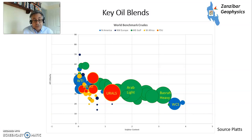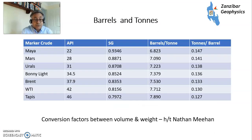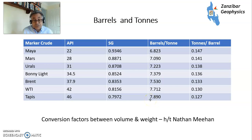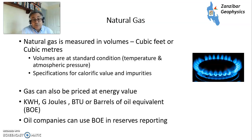So how do you convert between weight and volume? Nathan Ethan, a well-known petroleum engineer, published data on different crude types — Maya from Mexico, Mars from the US Gulf of Mexico, Urals from Russia, Bonny Light from Nigeria, Brent from the North Sea, WTI, and Tapis from Malaysia. They have different APIs and specific gravities. As crudes get lighter you get more barrels per ton. The barrels-per-ton factor is particularly relevant for Urals, as the Russians tend to export in tons.